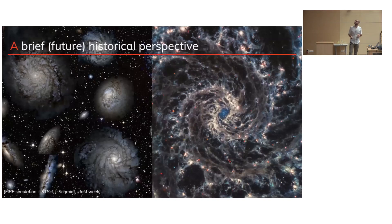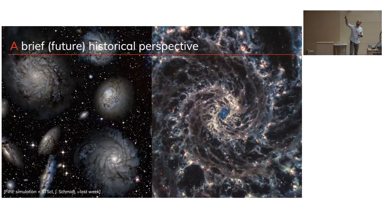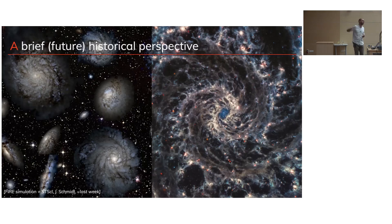A hundred years later, real images are as close as possible to what we thought we were simulating. On the left you have simulations of a disk-type galaxy from the FIRE simulations, and on the right a real three-color image of the core of a nearby galaxy. The first time I saw the image on the right, I thought the central part had been removed to show what's inside — but no, that's how the image actually looks. And if you look at the outputs of those simulations, you see something like that too. It's a great time to be alive, to be an astronomer.